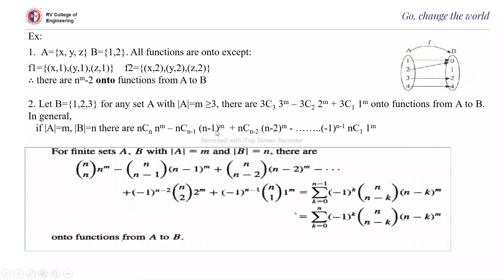This is called the Stirling number of the second order — the number of onto functions from A to B. For finite sets A and B with |A| = m and |B| = n, this is a formula you should remember. You can observe the pattern: it starts from C(n,n)·n^m, then alternates negative and positive. The n in the binomial coefficient remains constant, while the second element decreases: n−1, n−2, n−3, and the power m stays fixed. At the end it is C(1,1)·1^m.